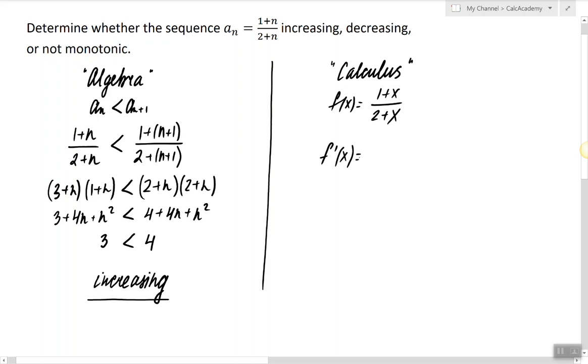So the derivative of this function is the derivative of the numerator times the denominator minus the derivative of the denominator times the numerator, divided by denominator squared. So 2 minus 1 is 1, and we have the following expression for the derivative.